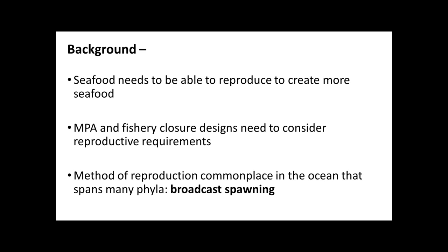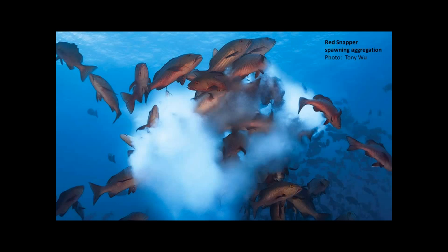The method of reproduction that is commonplace in the ocean across all phyla is broadcast spawning — the release of egg and sperm into the water column where they meet somehow in a very turbulent world. Sounds like the dating scene, but it's quite literal. This ranges from fin fish — here's a picture of red snapper spawning, showing a beautiful cloud of eggs and presumably sperm. A lot of fin fish come into aggregations, they swim really well, and in many cases there are fish species whose sperm can only live maybe a few seconds, because if they're any farther away they would never fertilize an egg — they're adapted to swarming in these aggregations.